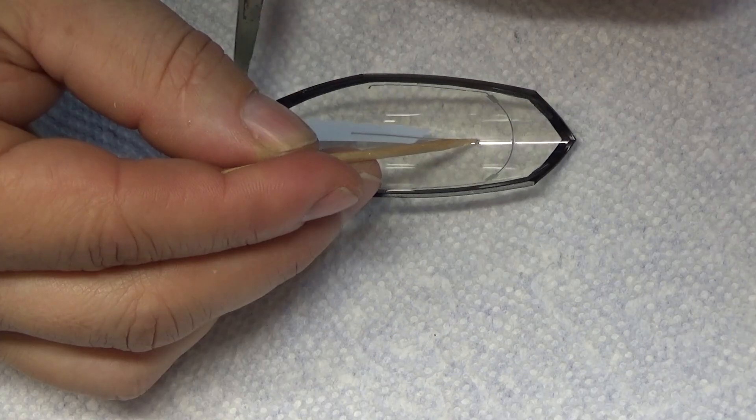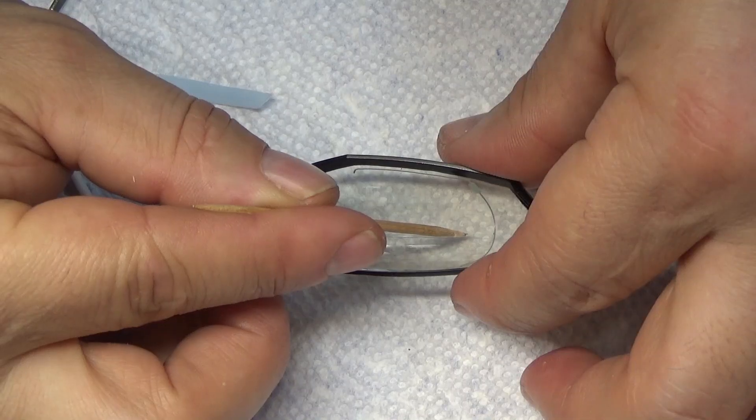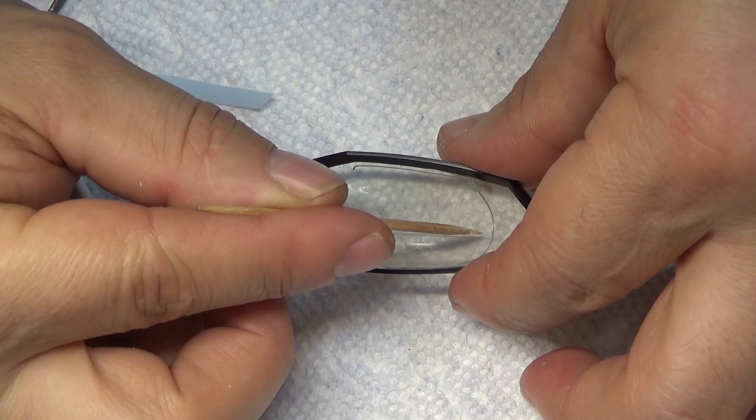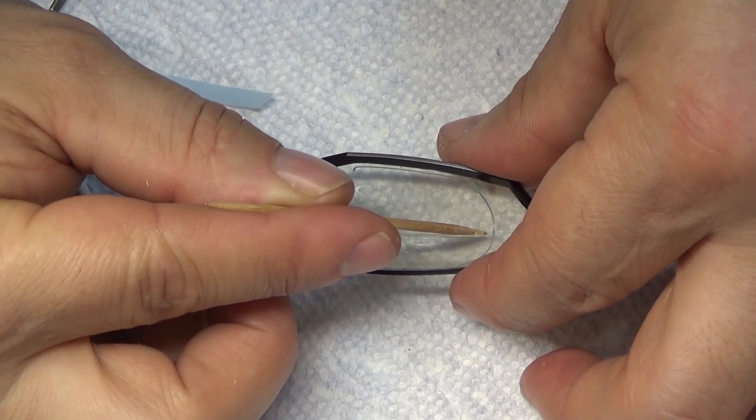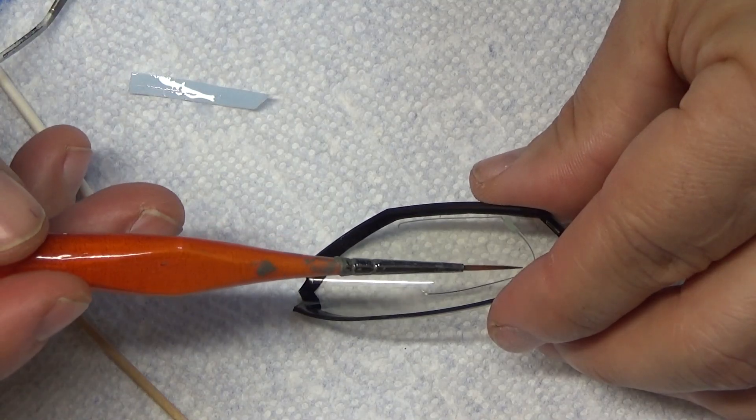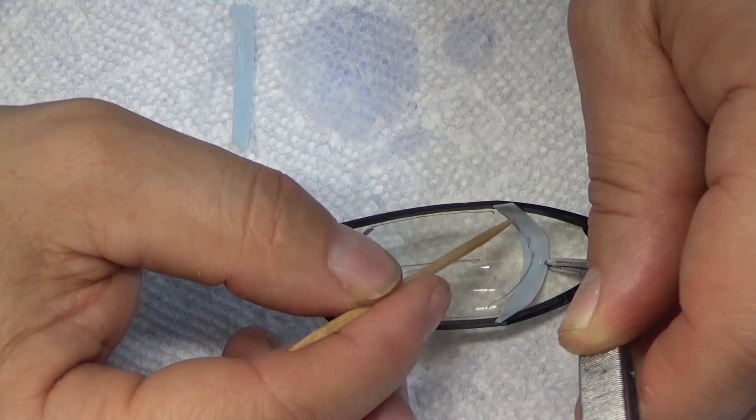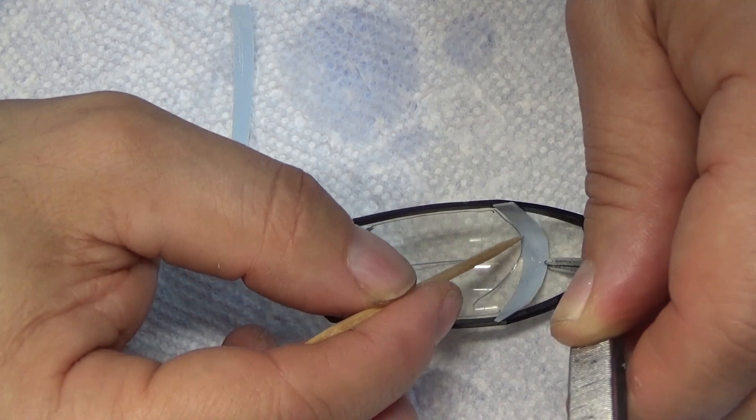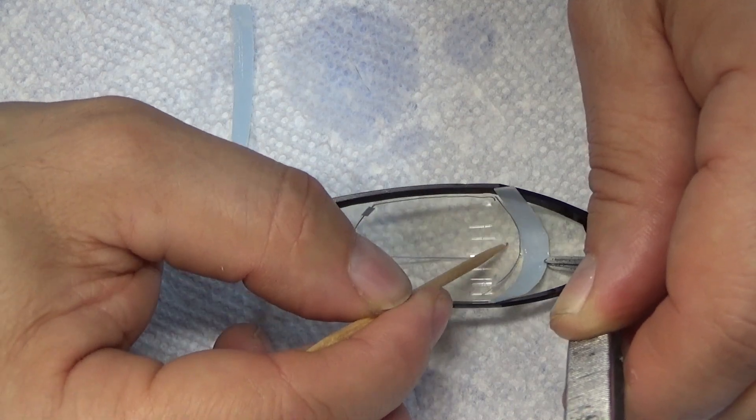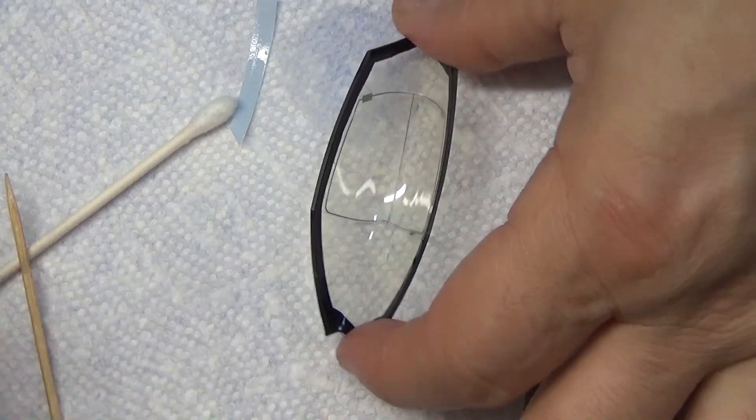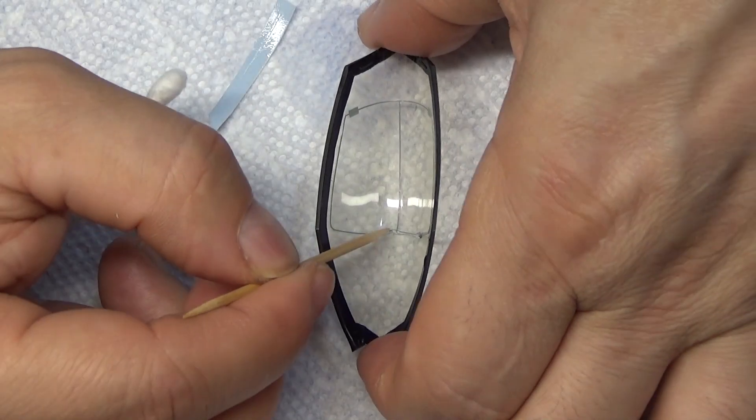Just like that there's also a decal that goes right in the middle just like this slowly push it up. Again use your toothpick to align it. Make sure everything is straight. It does have little grooves and registration in there so you have a good idea where to go. You're not just doing it blind. So that is a good thing.